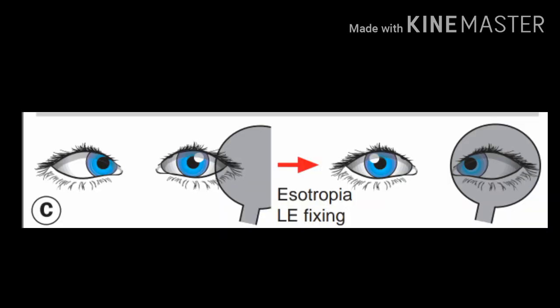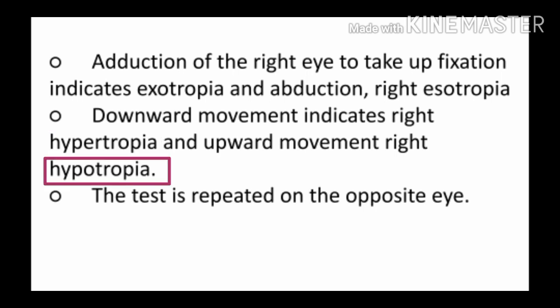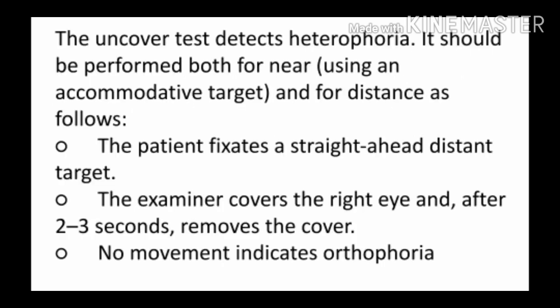If on covering the left eye the right eye deviates temporally, this is a case of esotropia. Similarly, if the right eye moves downward on covering the left eye, this indicates hypertropia. The key point is that the name of the tropia is opposite to the direction of movement of the uncovered eye: if the uncovered eye moves downward it is hypertropia, and if it moves nasally it is exotropia. After performing the test on one eye, the same test is performed on the other eye.